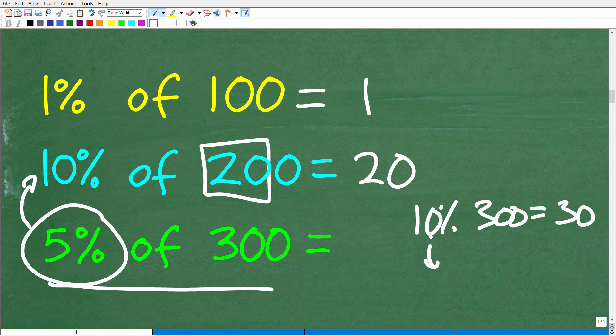So if we take this percent right here and divide it by two, which of course would be 5%, and divide the answer of 10% of 300, of course it's 30. If we divide that by two, it would be 15. So 5% of 300 is 15. So if this all makes sense, these are the little math tricks and math hacks that you can use in order to do basic percent problems.